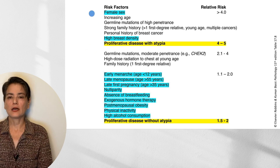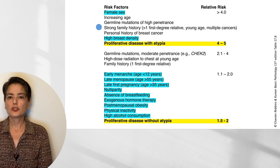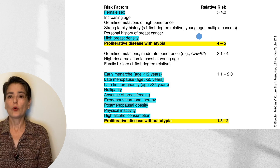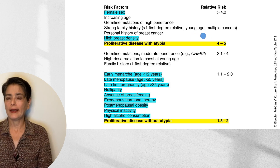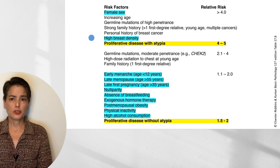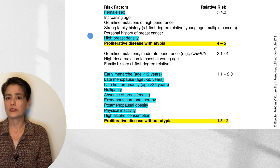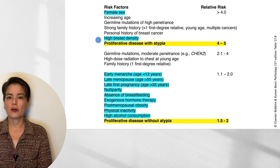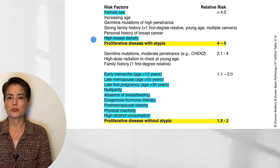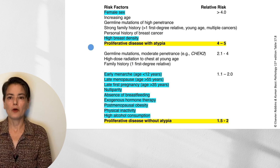As I already mentioned, female sex is very strongly associated with breast carcinoma. Strong family history is when you have more than one first-degree relative, or someone who develops breast cancer at a young age or has multiple cancers. A personal history of breast cancer is also associated with increased risk of invasive cancer developing again. High breast density, thought to be secondary to increased estrogen, also increases relative risk. And then we have proliferative disease with atypia.